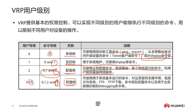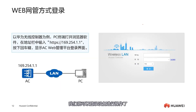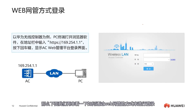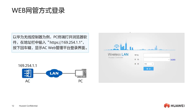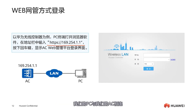Now let's look at how to log in via the web management interface. This method is very similar to our routers — our PC is connected to our AC, then an IP address is configured on the AC. We can then use HTTPS and enter this IP address and press enter, thus logging into our management interface, very similar to a router.